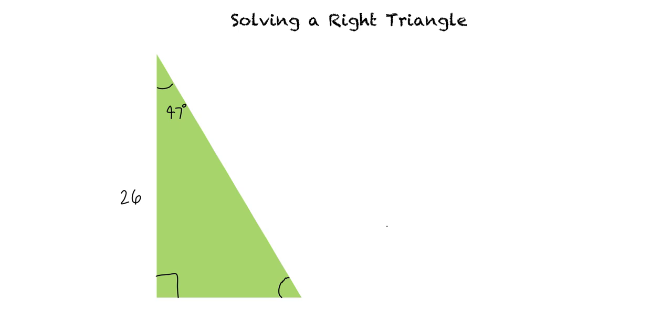How can we begin this problem? Let's start by finding the remaining angle. We are given two of the three angles, 47 and 90 degrees.